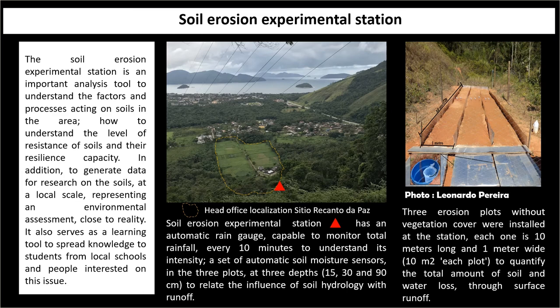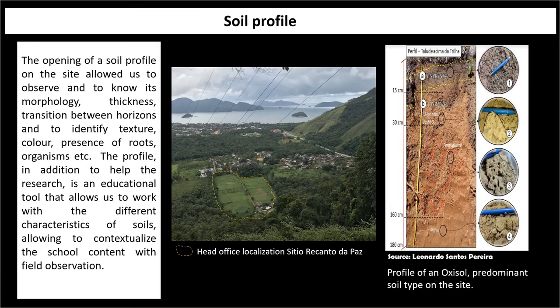A soil profile was made by Leonardo de Santos Pereira. It is an oxisol, the predominant soil type on the site. Opening a soil profile on the site allowed us to observe its morphology, thickness, transition between horizons, and to identify texture, color, presence of roots and organisms. In addition to helping the research, the profile is an educational tool that allows us to work with different characteristics of soils and to contextualize school content with field observation.